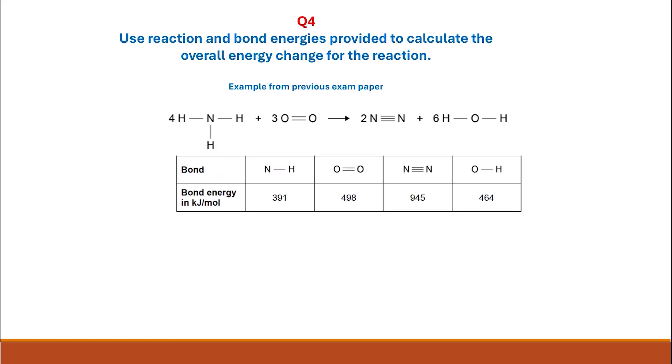Question 4: Use reactions and bond energies provided to calculate the overall energy change for the reaction. This is an example from a previous exam paper where ammonia with oxygen gives you nitrogen and water. You need to calculate first the energy taken in for bond break, which are the energies for the reactants.